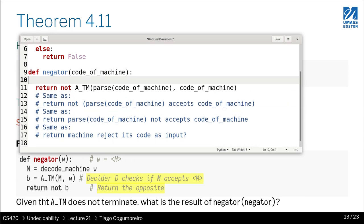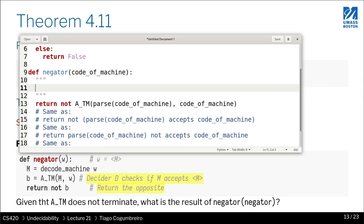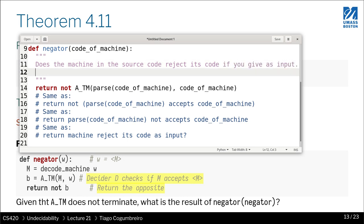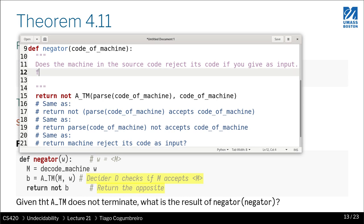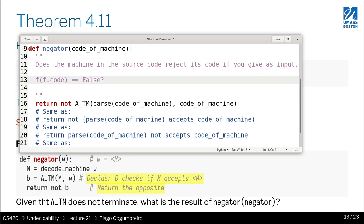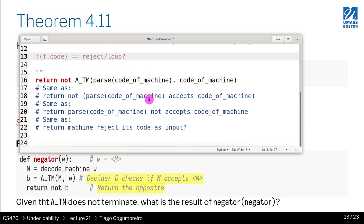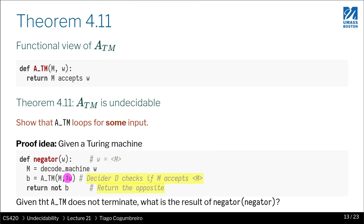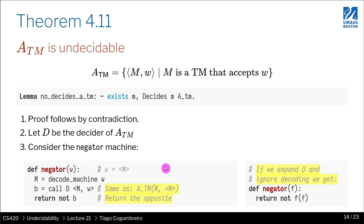To summarize: the negator returns true if the machine rejects or loops on its own code as input. You can think of it as: if you run machine f with f's code, does it reject? In the next video, I'm going to explain how to do the actual proof.